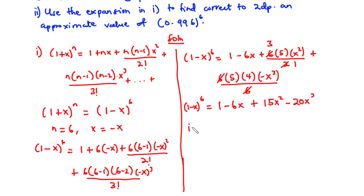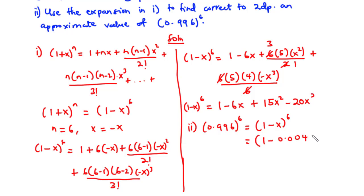For part ii, we need to approximate 0.996^6. We represent 0.996 as (1 minus 0.004), so 0.996^6 equals (1 minus 0.004)^6. The value of x is found by subtracting 0.996 from 1, giving x equals 0.004. We will substitute x equals 0.004 into our expansion.